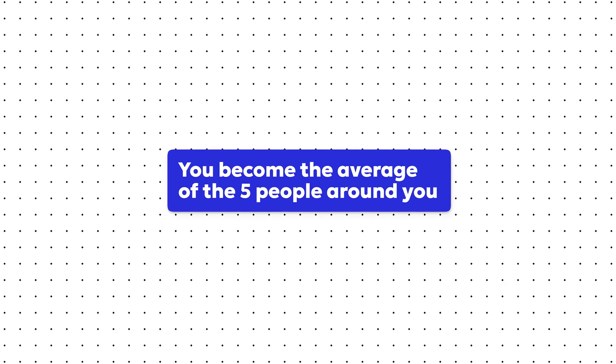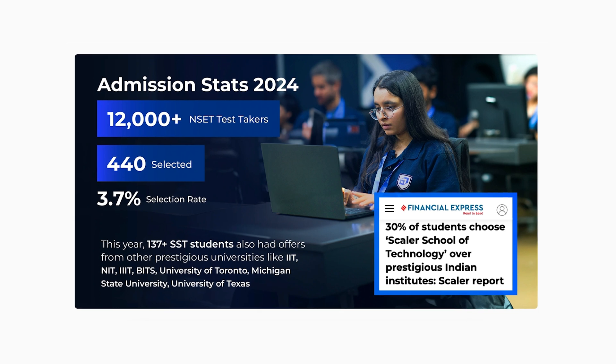The next parameter is peers — what kind of students study at this college. In my opinion, this is one of the most important factors because you become the average of the five people around you. We are building the Ivy League for Computer Science, being very careful about whom we admit. In 2024, 12,000 people applied and only 440 were admitted, with a selection rate of 3.8%. Many who came here had great profiles and JEE scores, and 137 of them left Tier 1 offers from other colleges to come here. This creates an atmosphere on campus where everyone is doing great things, so you grow faster. You should check the selection rate of any college and ask authorities — the good ones are transparent and will share it.